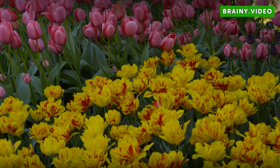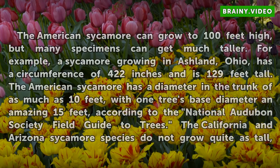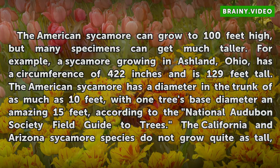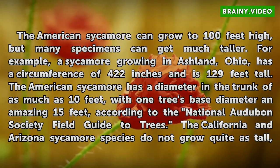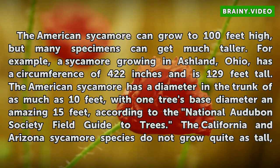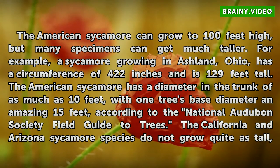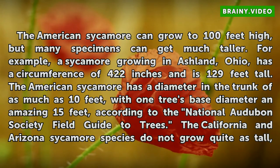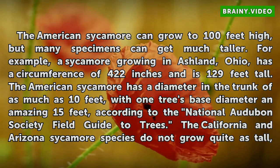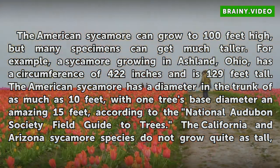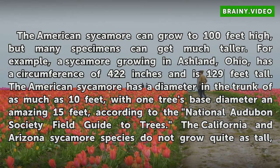Size. The American sycamore can grow to 100 feet high, but many specimens can get much taller. For example, a sycamore growing in Ashland, Ohio, has a circumference of 422 inches and is 129 feet tall. The American sycamore has a diameter in the trunk of as much as 10 feet, with one tree's base diameter an amazing 15 feet.